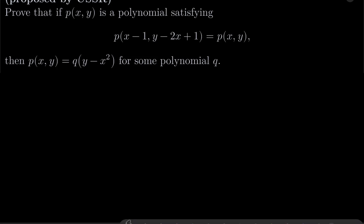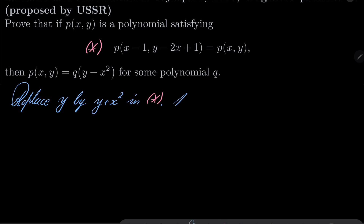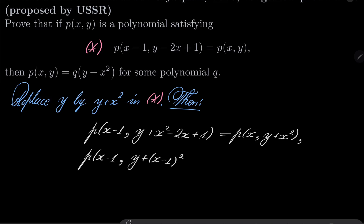Alright, so let's take our functional equation and replace y by y plus x squared in our condition (asterisk). Notice that then we have the following: p of (x minus 1, y plus x squared minus 2x plus 1) equals p of (x, y plus x squared). Also notice that we can write p of (x minus 1, y plus (x minus 1) squared) equals p of (x, y plus x squared).